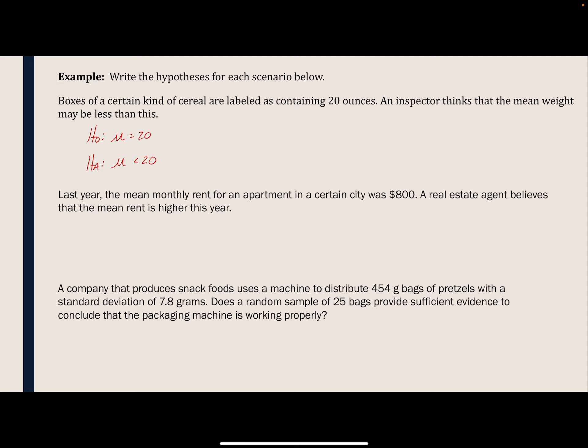Last year, the mean monthly rent for an apartment in a certain city was $800. A real estate agent believes that the mean rent is higher this year. So, again, the null hypothesis is that nothing has changed. There has been no change in the rent. But the question or the claim is that this year the rent has increased. It's higher than $800.